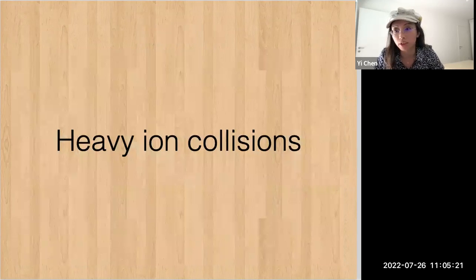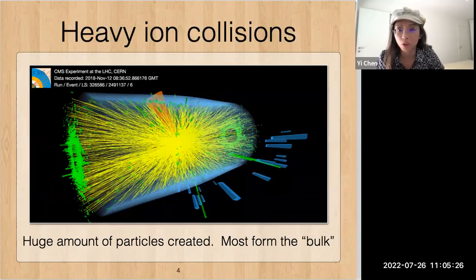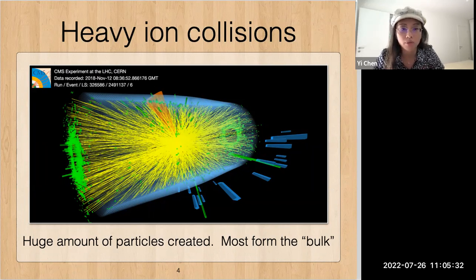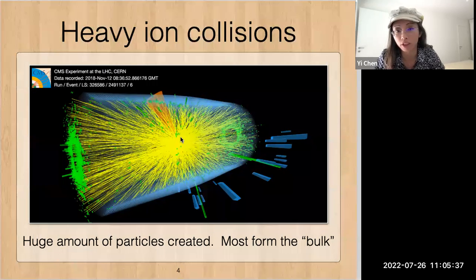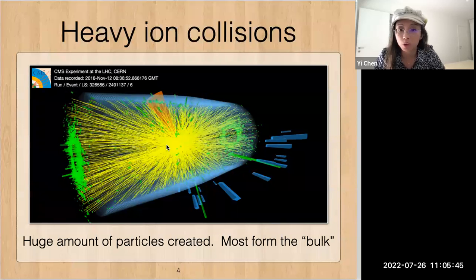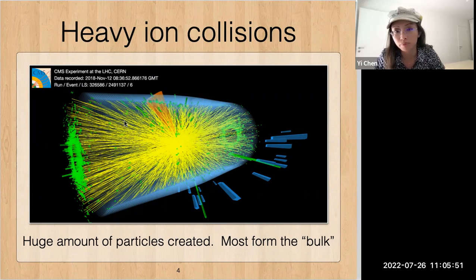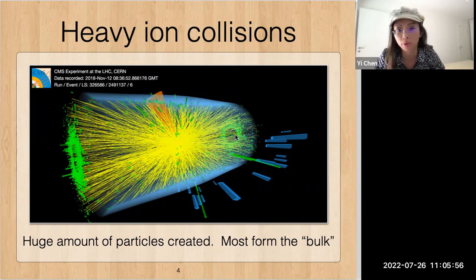Let's start with heavy ion collisions. Julia has already described a lot about the basics of heavy ion collisions. Here I will just briefly mention — this is an example event of heavy ion collisions at the LHC. This is the lead-lead collision. We can see that there is a huge amount of particles created. Each yellow line here is one charged particle, and there are also neutral particles not plotted as lines.